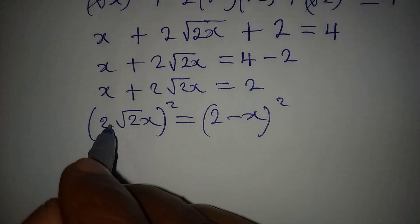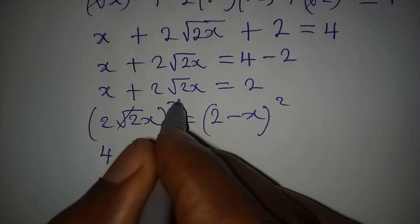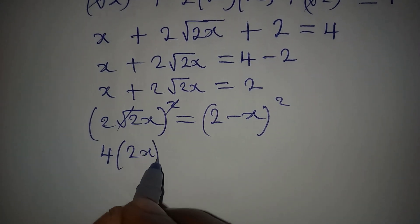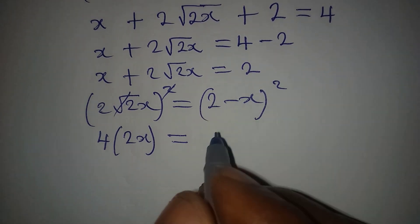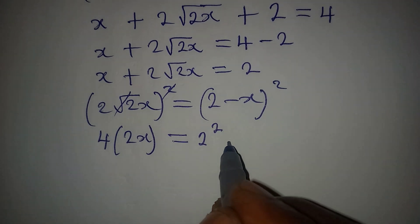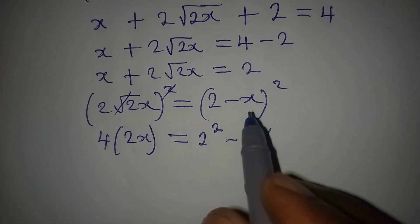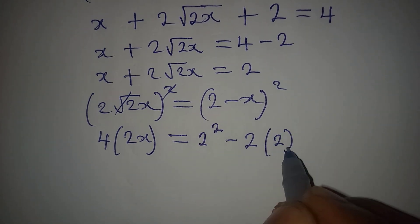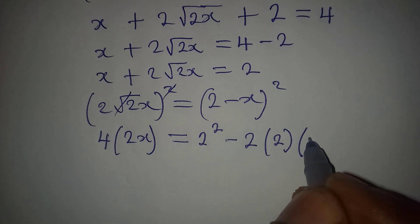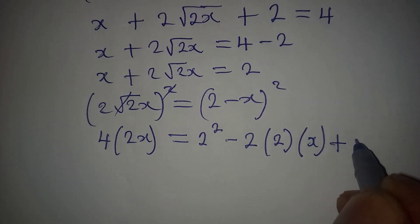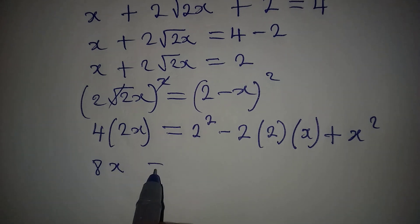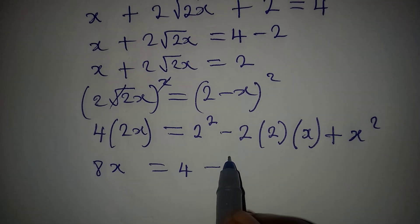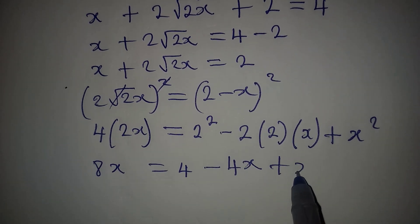Squaring both sides: (2√(2x))² = (2 − x)². The left side gives 4 · 2x = 8x. The right side expands as 2² − 2·2·x + x², which is 4 − 4x + x². So 8x = 4 − 4x + x².